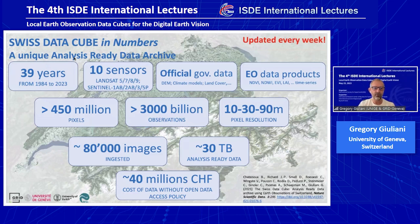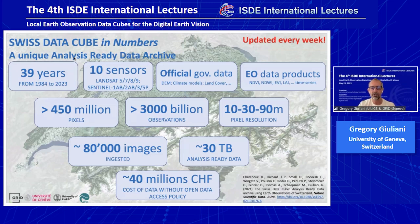Since then, we now have 39 years of Earth observation data coming mostly from Landsat and Sentinel — the entire Sentinel archive plus the Landsat archive. At the beginning it was only a satellite data cube, but now we are also ingesting official governmental data: other types of data like the digital elevation model, output of climate models from MeteoSwiss, and the official land cover maps. We are also generating data products out of the satellite data, which are also readily available in the data cube. We are incrementally expanding the number of datasets available.